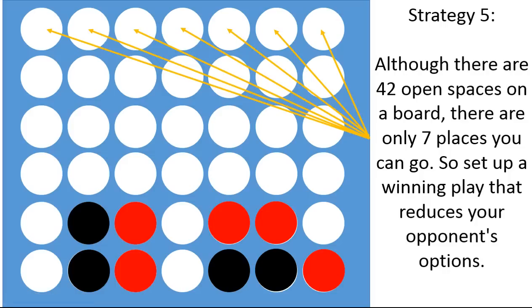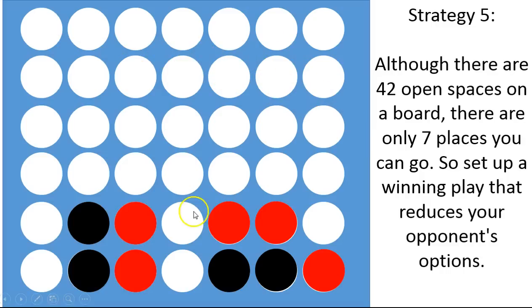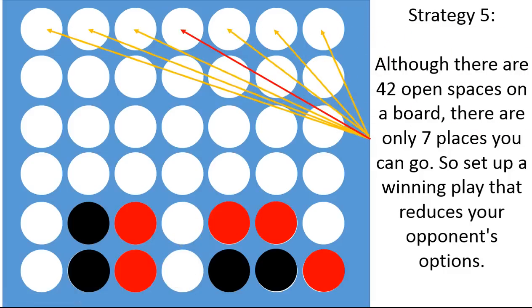So you only really have seven options of where you can go. If you own a column, basically what you've done is you've set up a situation where the other player is limited in their options. Look at the board that we have here. See how if black goes here, red wins. So that means that red owns that column.